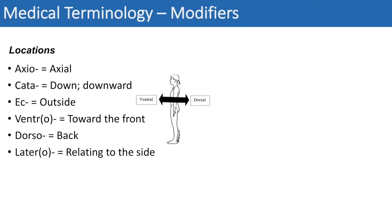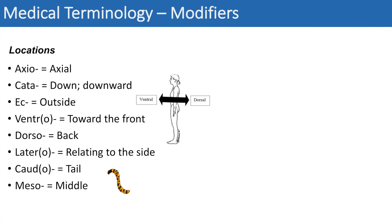The next one is latero or lateral, which means relating to the side. The next one is caudo or caudal, which means tail — this might more relate to use in animals, but we also use the word caudal when describing the human body. The next one is meso, which simply means the middle — you can think of mesoderm, that embryonic tissue layer between endoderm and ectoderm.